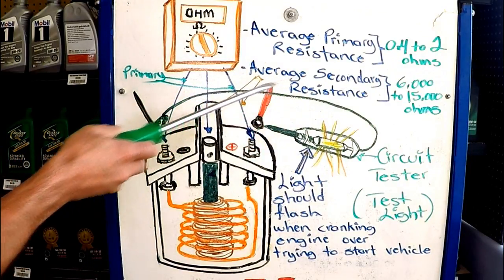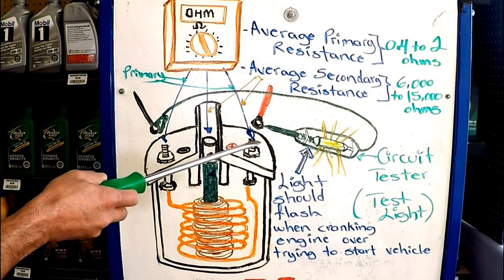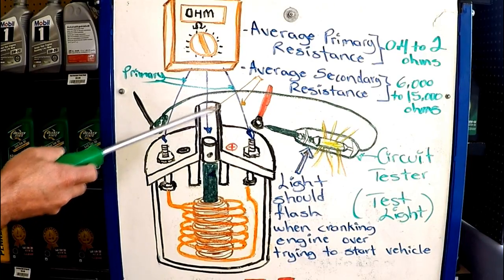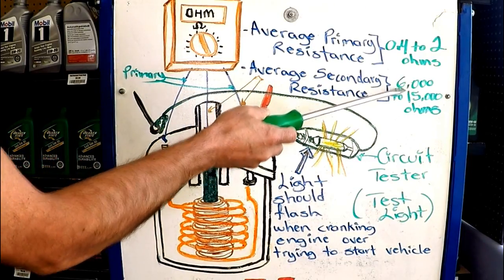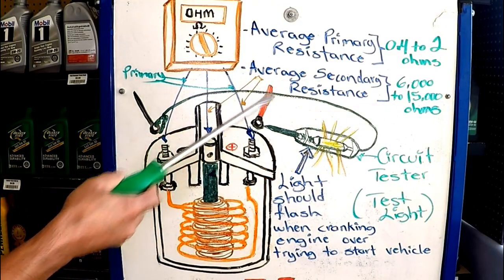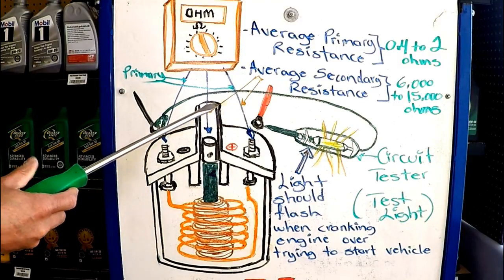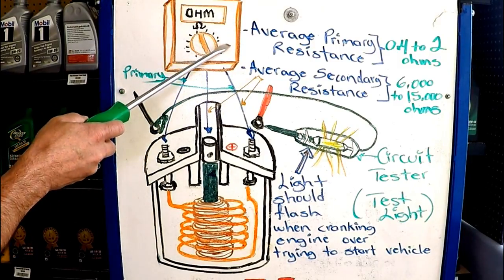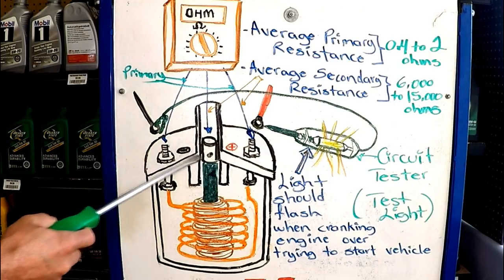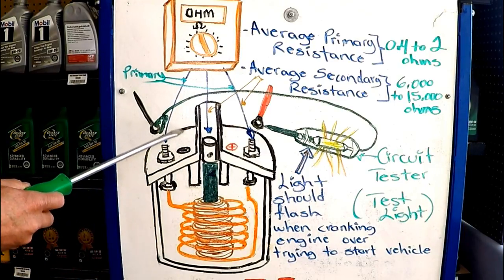Now to check the secondary resistance you connect the leads to the positive and the output wire. And the reading should be anywhere from 6,000 to 15,000 ohms. And like I said this is an average reading, you still need to find out what yours should have. So those are a couple of tests that you can do with an ohmmeter, and that will enable you to know if there are shorts or open circuits within the coil itself.